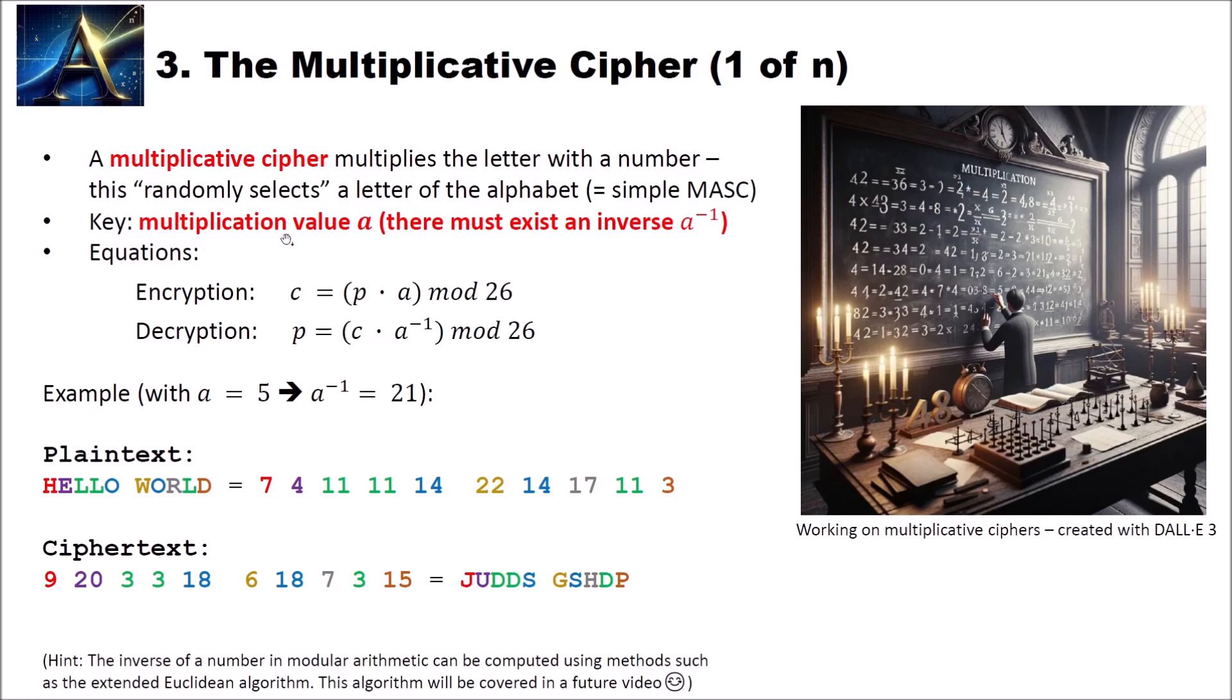The key of the multiplicative cipher is our multiplication value a. And there must exist an inverse a to the power of minus 1. If we don't have an inverse we cannot encrypt. When does such an inverse exist? An inverse of a number a exists when a and 26 here, the mod value, are co-prime.